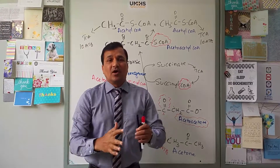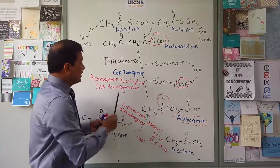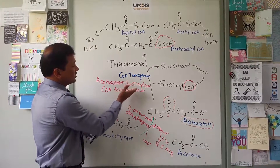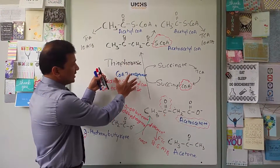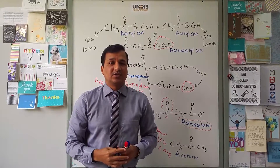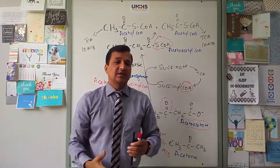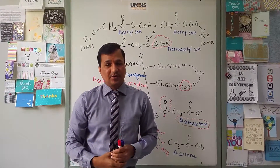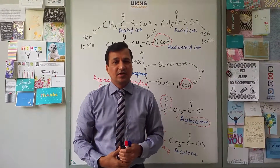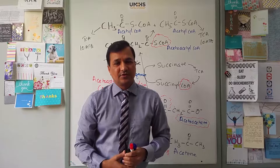So the overall pathway is: 3-hydroxybutyrate → acetoacetate (yielding 2.5 ATP) → acetoacetyl-CoA → two acetyl-CoA molecules → TCA cycle (10 ATP each). All peripheral tissues except red blood cells and liver can use ketone bodies this way. The liver cannot use ketone bodies because it lacks the enzyme thiophorase — also called CoA transferase or acetoacetate-succinyl-CoA CoA transferase. The liver only synthesizes ketone bodies and exports them to other tissues for energy. This is all about ketolysis — the breakdown and utilization of ketone bodies by peripheral tissues.